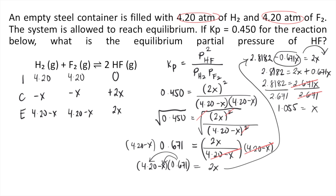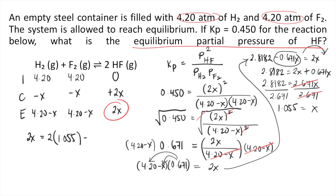That is the value of X. The problem asks for the equilibrium partial pressure of HF. Going back to the ICE table, the equilibrium partial pressure of HF is 2X. Since X equals 1.055, that is 2 times 1.055, which equals 2.11 atm. So the answer to this question is 2.11 atm.